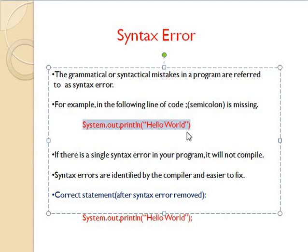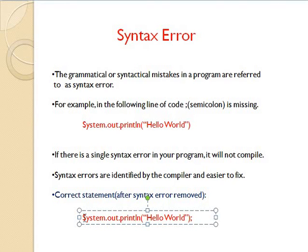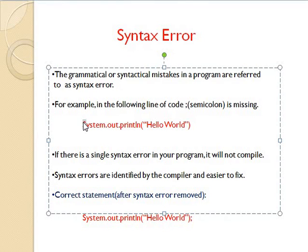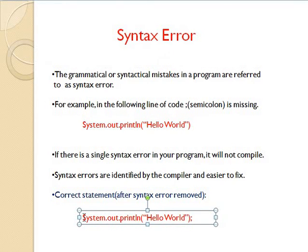The compiler will process this statement and upon doing that, it will identify the error that a semicolon is missing at the end, and that error will be presented in front of the user. The user, upon seeing that error message, can rectify the error by just placing the semicolon at the end of this Java statement. This is shown in the second Java statement, which is the correct one having the semicolon at the end. So this Java statement which does not contain the semicolon has the syntax error, and when you put the semicolon at the end, this statement is now free from the syntax error.